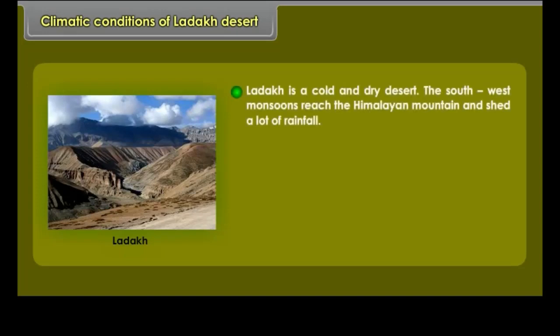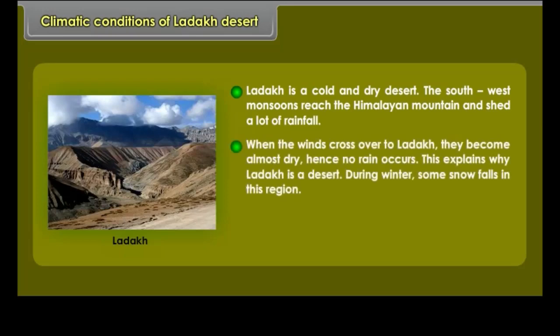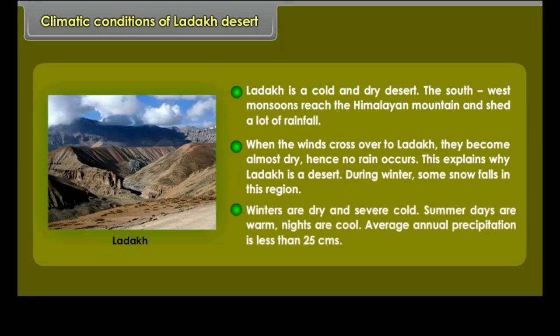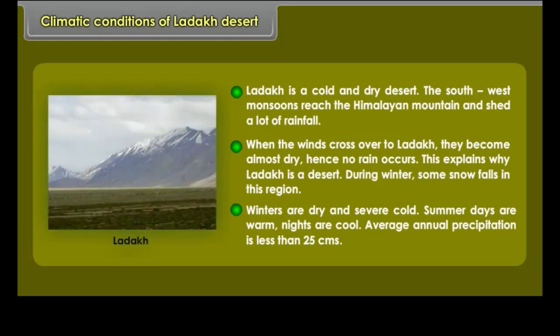Ladakh is a cold and dry desert. The southwest monsoons reach the Himalayan mountains and shed a lot of rainfall. When the winds cross over to Ladakh, they become almost dry, hence no rain occurs — this explains why Ladakh is a desert. During winter, some snow falls in this region. Winters are dry and severely cold. Summer days are warm and nights are cool. Average annual precipitation is less than 25 centimeters.